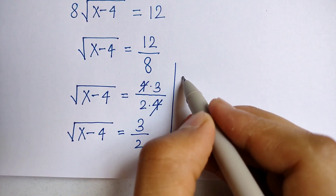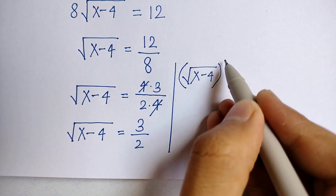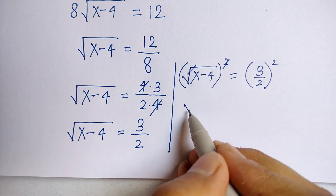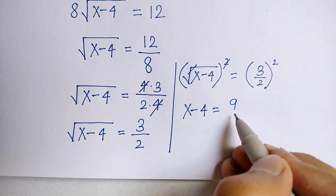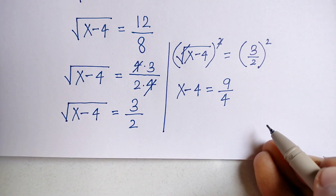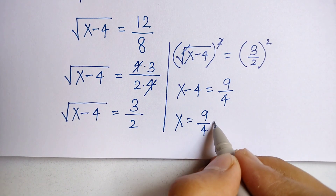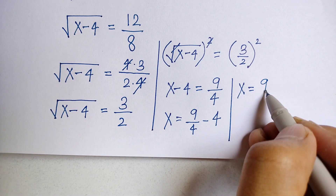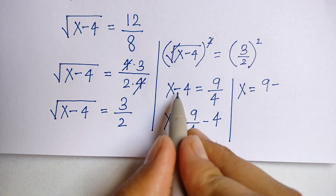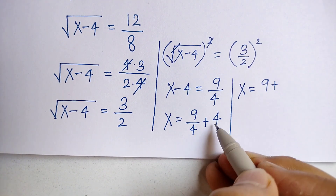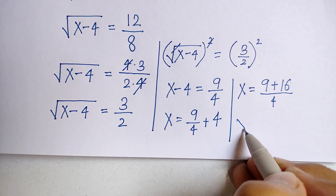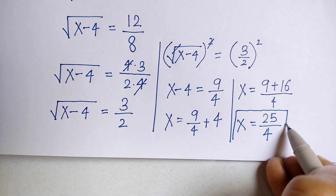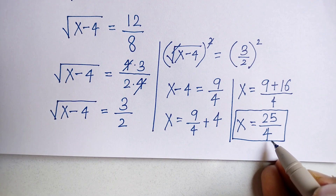Squaring both sides, the square and square root cancel, so x minus 4 is equal to 3 squared over 2 squared, which is 9 over 4. Therefore x is equal to 9 upon 4 plus 4. That gives us 9 plus 16 over 4, which is 25 upon 4. This is our final answer.